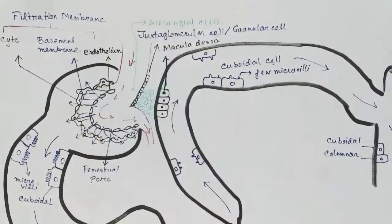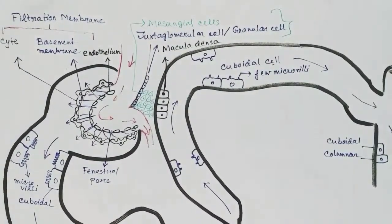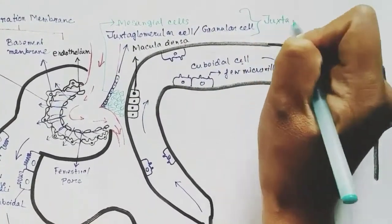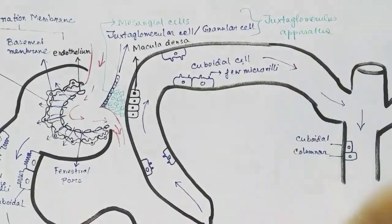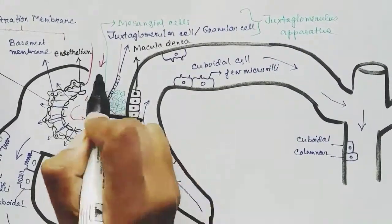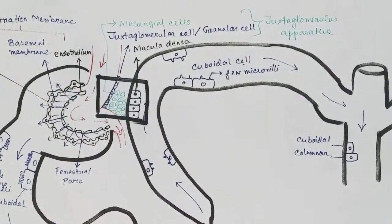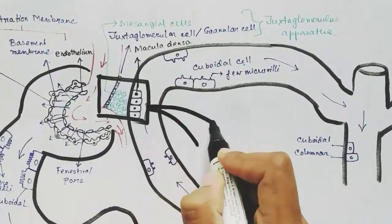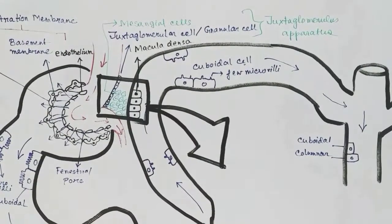These are the mesangeal cells present at the junction. These three cells - the juxtaglomerular cells, the macula densa cells, and the mesangeal cells - together form the juxtaglomerular apparatus. This region is the juxtaglomerular apparatus, and we will zoom into this and discuss more about it.